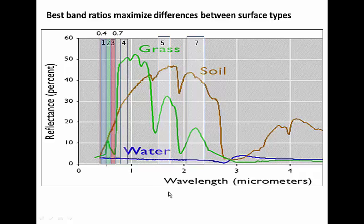Finally, for water, I'm going to pick a band ratio of band 1 over band 5. That's going to give me a relatively high ratio for water. And it's going to give me relatively small ratios for the other.